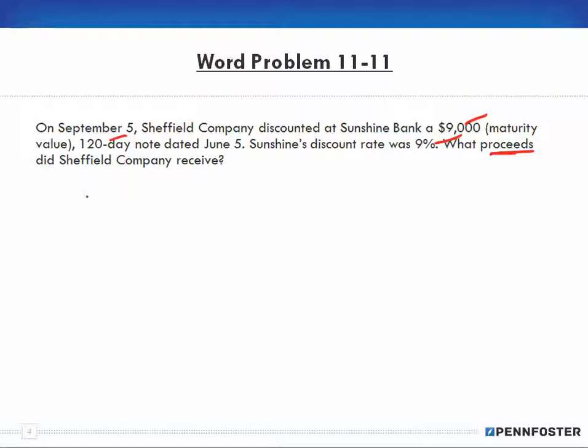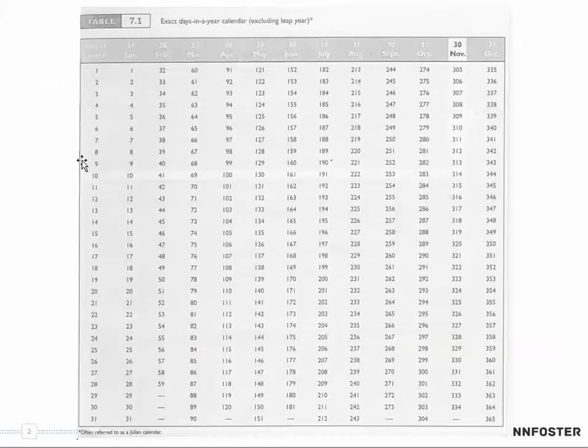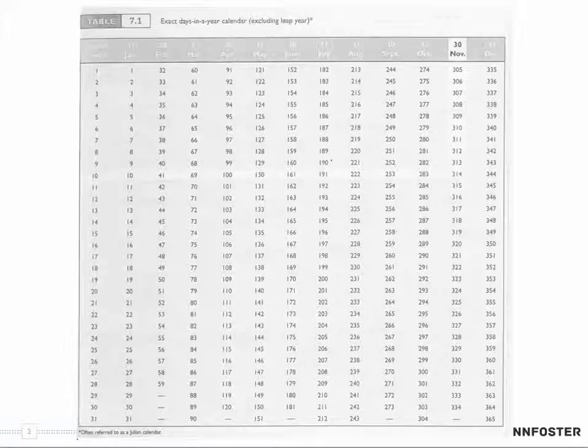Okay, so the first thing that we need to do is we need to figure out what the discount period is. Okay, so let's go back up to our Julian calendar here and it started on September 5th. Okay, so September 5th is 248.